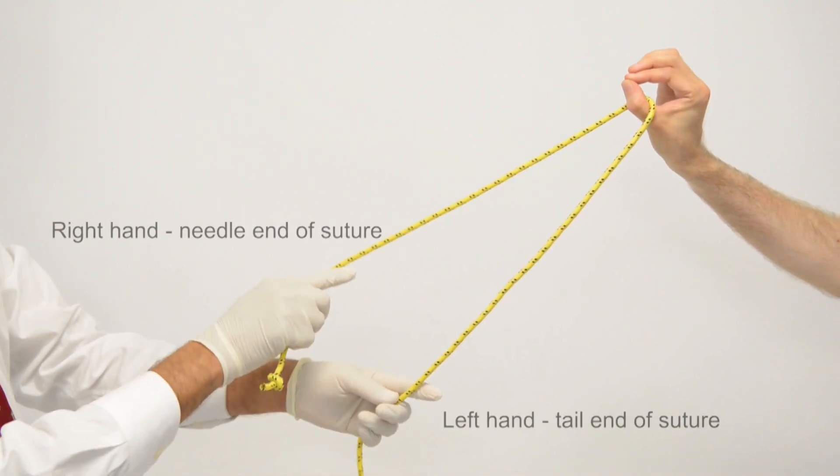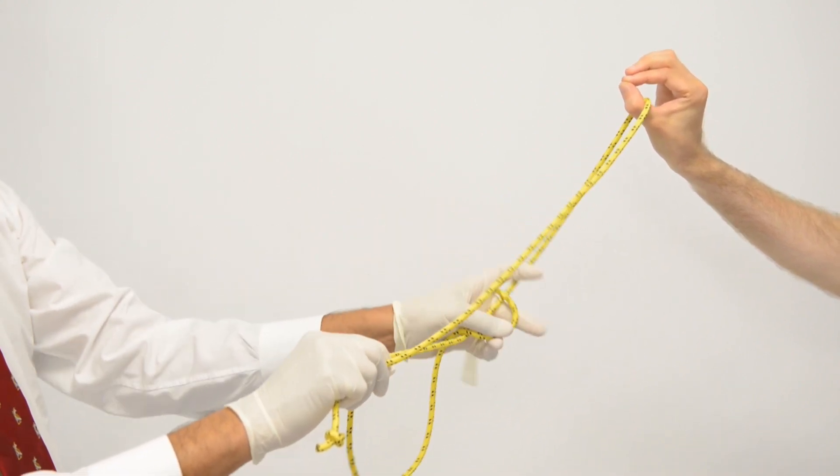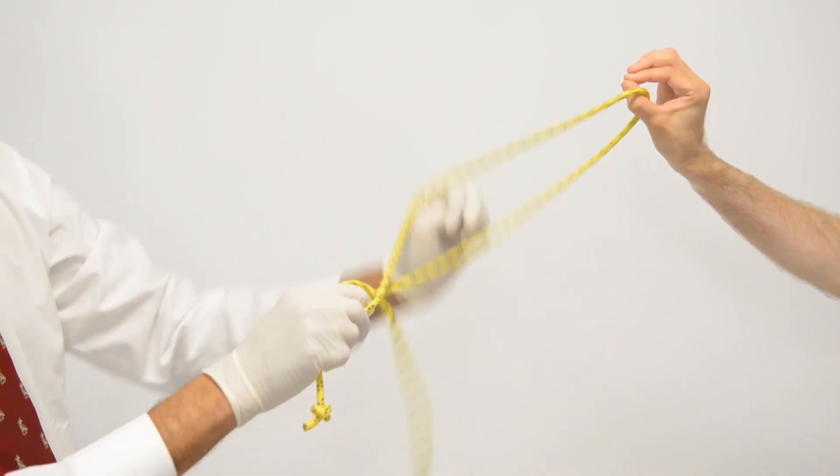Now, pass this rope through your assistant's fingers as shown. Holding the tail end of the rope in your left hand, tie a single reef knot.